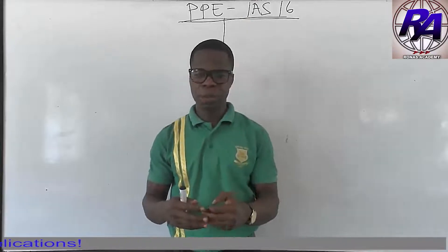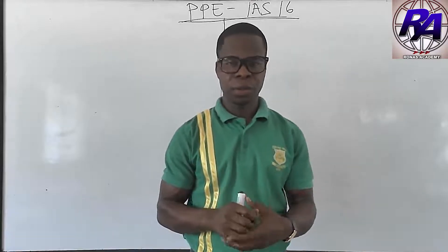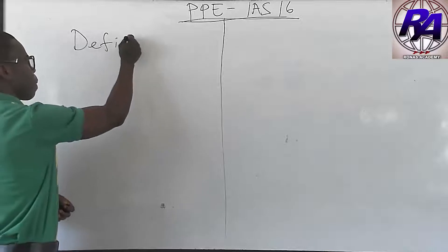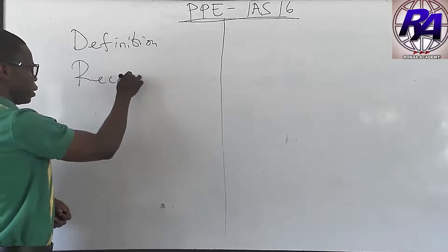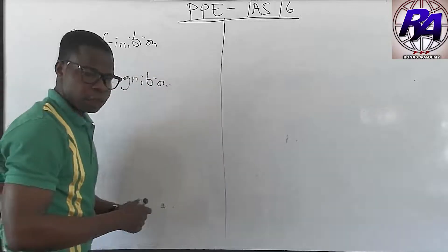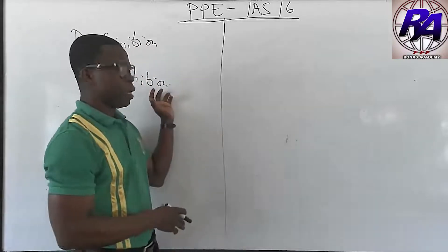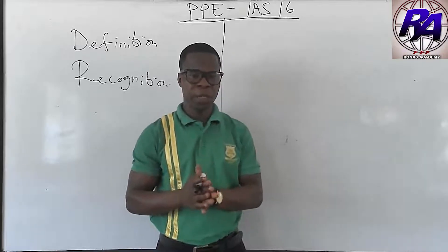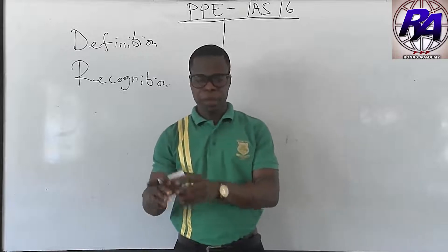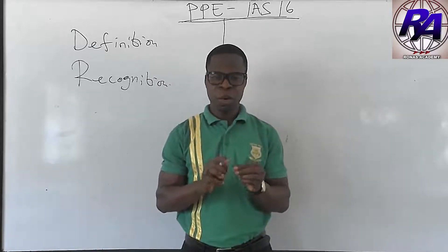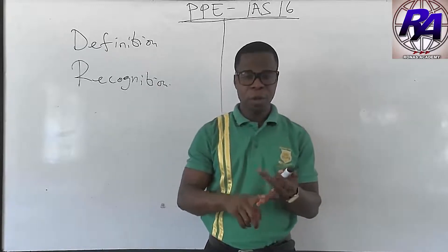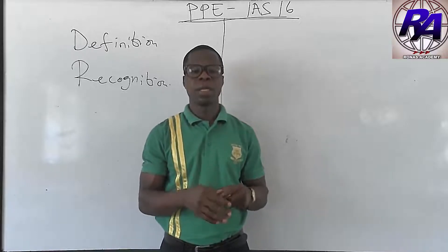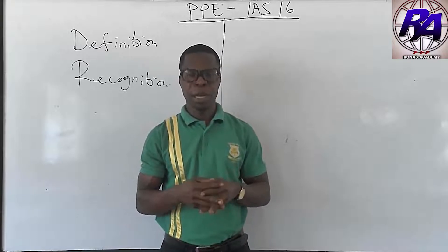Now let's look at recognition. When should an entity recognize an item of PPE in its books? When it comes to recognition, we are saying that the economic benefits from the PPE will flow to the business and those economic benefits can be measured reliably. So once those two criteria are met, we can recognize PPE in the books of account.